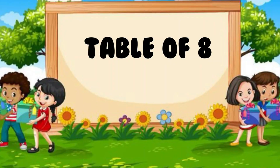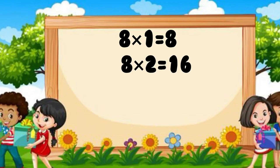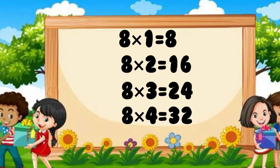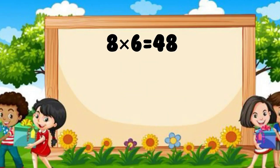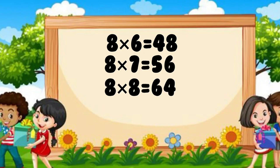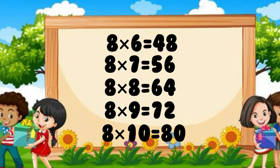Table of Eight. Eight ones are eight. Eight twos are sixteen. Eight threes are twenty-four. Eight fours are thirty-two. Eight fives are forty. Eight six are forty-eight. Eight sevens are fifty-six. Eight eights are sixty-four. Eight nines are seventy-two. Eight tens are eighty.